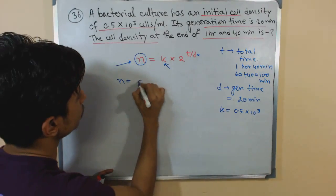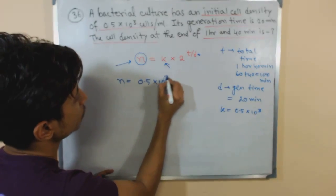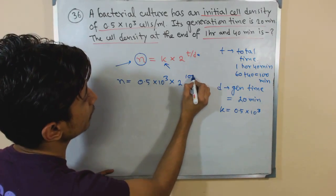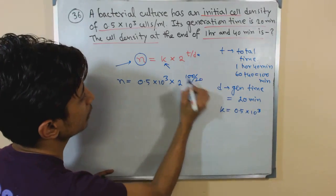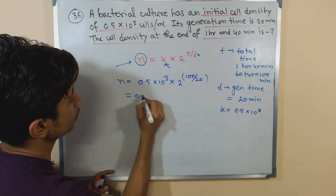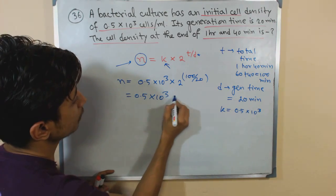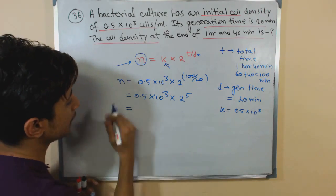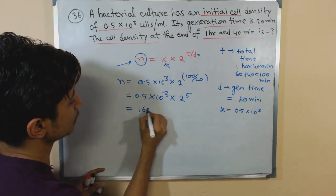We get all the values, we simply put them and we get the value of n. So it's very very easy: 0.5 into 10 to the power 3 into 2, T is 100, D was 20. So let's do this: 0.5 into 10 to the power 3 into 2 to the power 5.